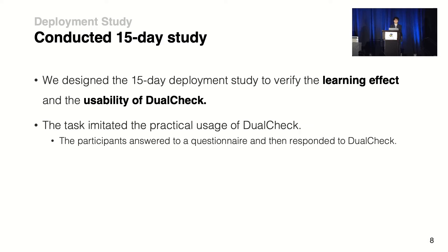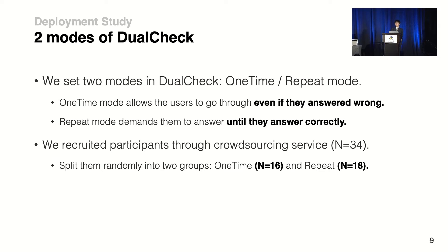To verify the learning effect and usability of Dual Check, we conducted a 15-day user study. We set two modes: one-time mode, which allows users to proceed even if they answered incorrectly, and repeat mode, which requires users to answer the same question repeatedly until they reach the correct answer. We recruited 34 participants from a crowdsourcing platform and randomly split them into the two groups.